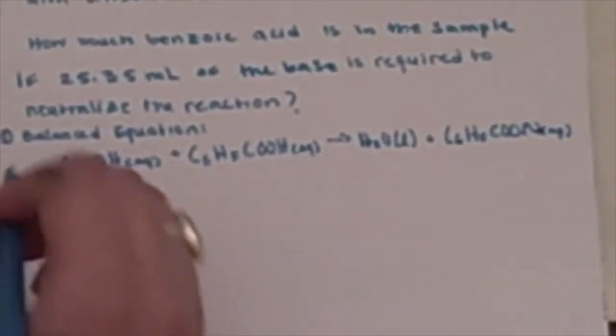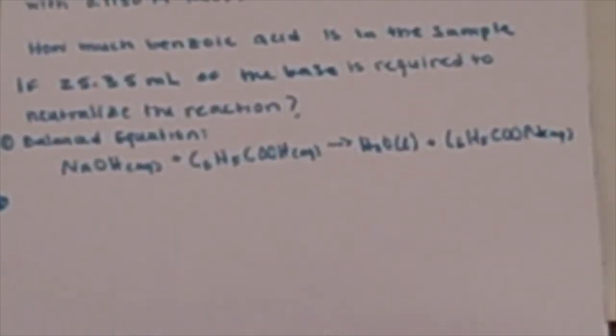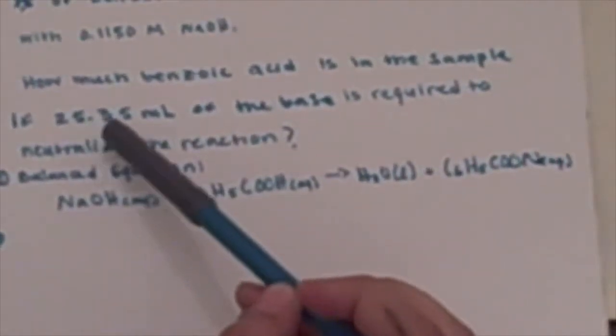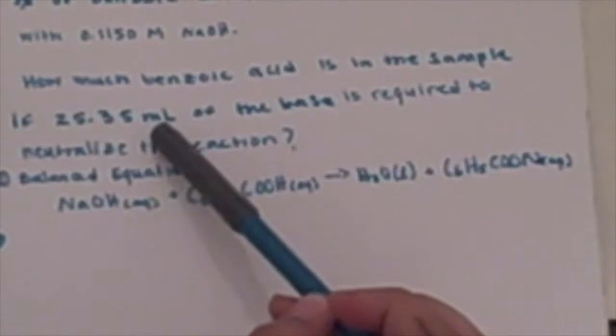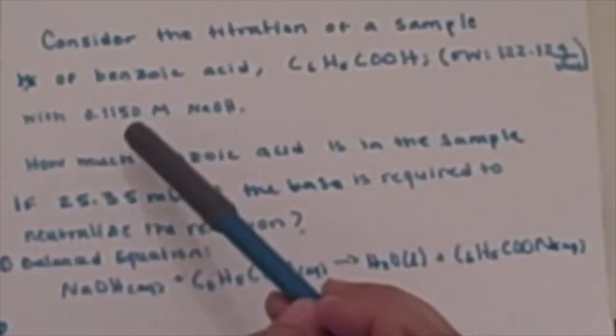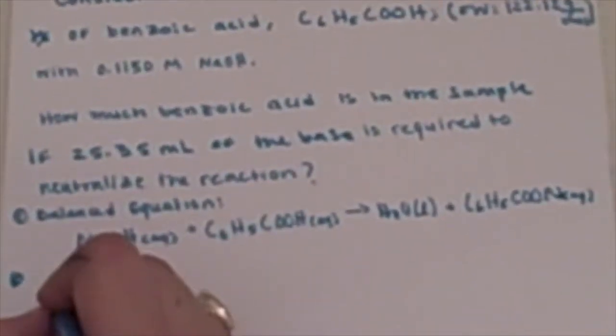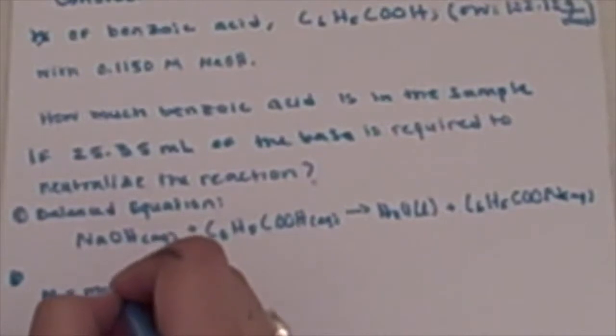The second part is determining how many moles of titrant we used. What they gave us is that we used 25.35 milliliters of the base, and we also have the molarity of the base. As we know, molarity is moles over liters.